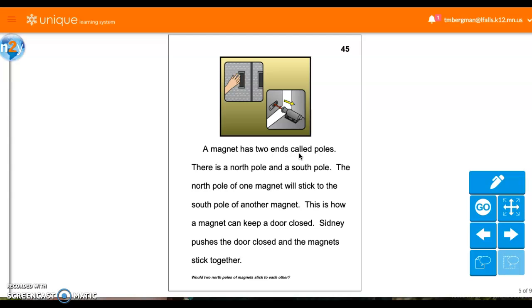The magnet has two ends called poles. There is a north pole and a south pole. The north pole of one magnet will stick to the south pole of another magnet. This is how a magnet can keep a door closed. Sydney pushes the door closed, and the magnets stick together. Would two north poles of magnets stick to each other? They wouldn't, so you need the opposite. So the opposites will go together. A north and a south can attract each other, but a north and a north cannot.